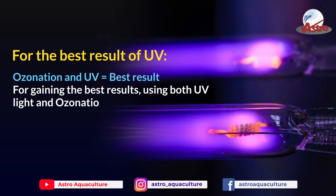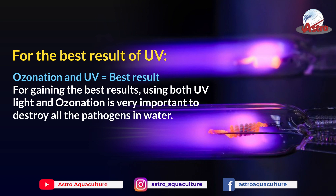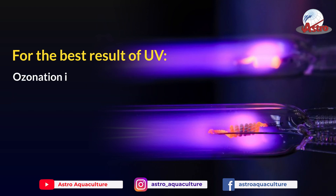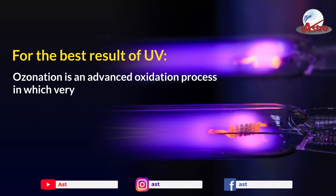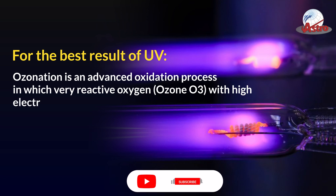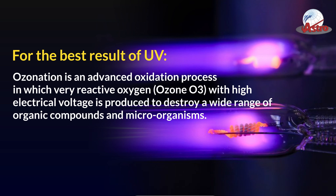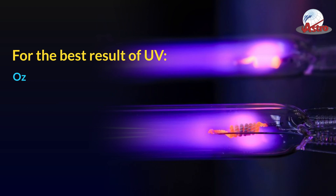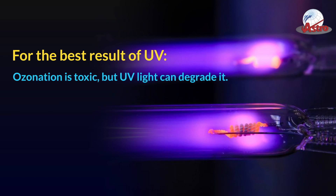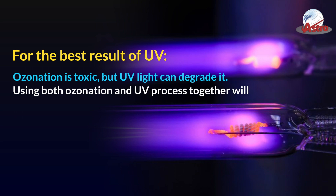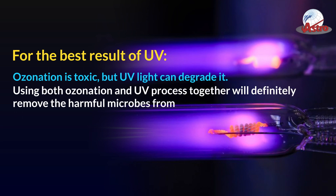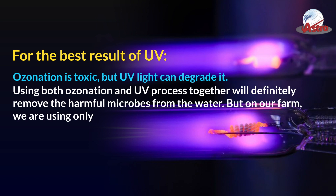For the best results, using both UV light and ozonation is very important to destroy all pathogens in water. Ozonation is an advanced oxidation process in which very reactive oxygen — ozone (O3) — with high electrical voltage is produced to destroy a wide range of organic compounds and microorganisms. Ozonation is toxic, but UV light can degrade it. Using both ozonation and UV together will definitely remove harmful microbes from the water.